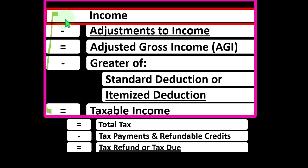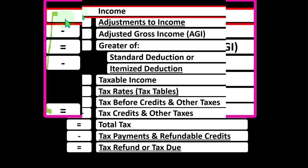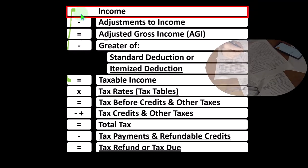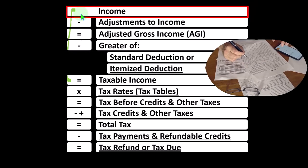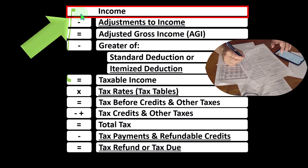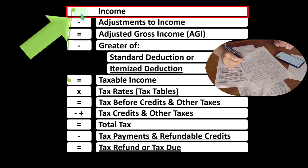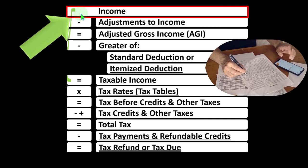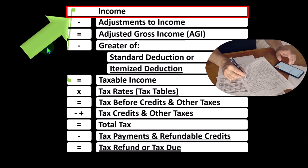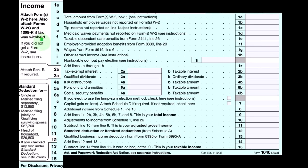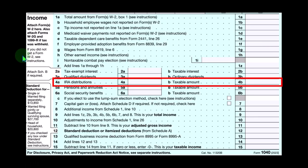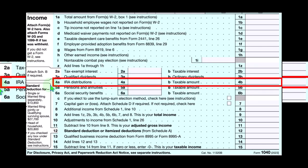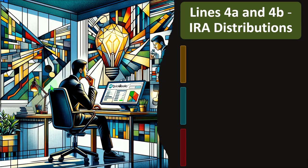We might have certain items in income that could be subject to different tax rates other than ordinary income — usually favorable rates, such as qualified dividends or possibly long-term capital gains. This is the first page of the Form 1040. We're looking now at IRA distributions, which can be found on line four.